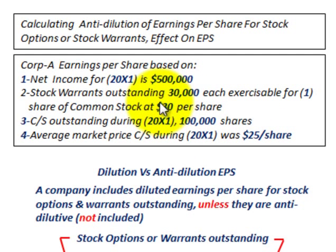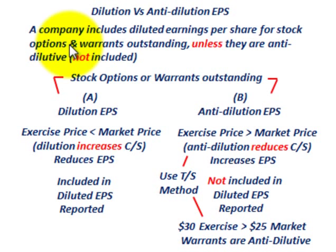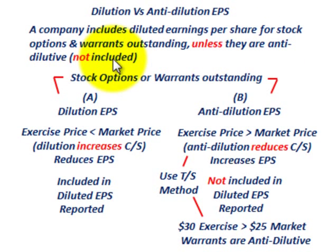The stock warrants can be exercised at $30 per share, but the average market price for common stock is $25 per share. A company includes the diluted earnings per share for stock options or warrants that are outstanding, unless they are anti-dilutive — in that case they would not be included in the diluted earnings per share.